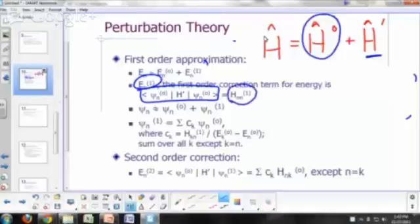and we can abbreviate that with this symbol right here, h n n, and then the one here simply indicates that you're dealing with the first-order correction.